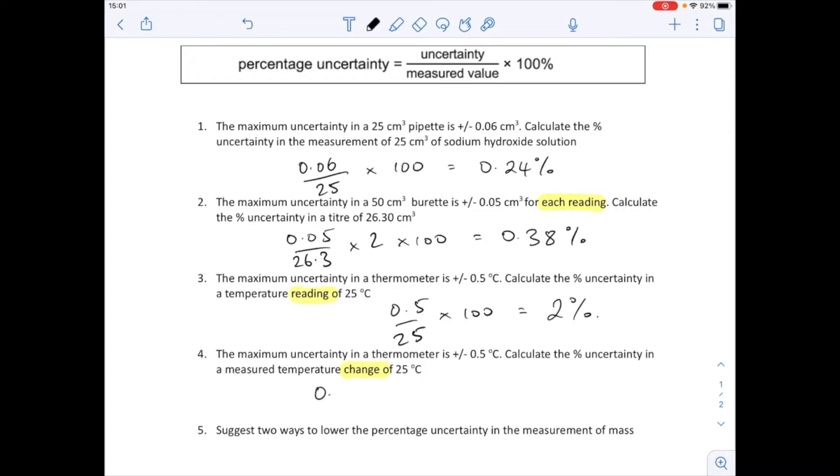So again, we're going to need to double this error. So it's 0.5 divided by 25, but we're doubling this one because there's two readings gone into that 25, times 100. So that's 4%.